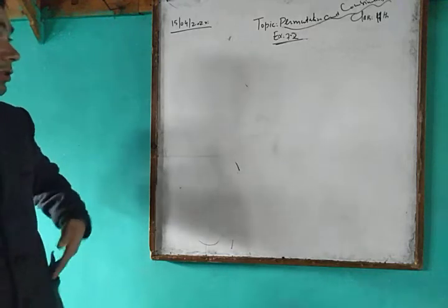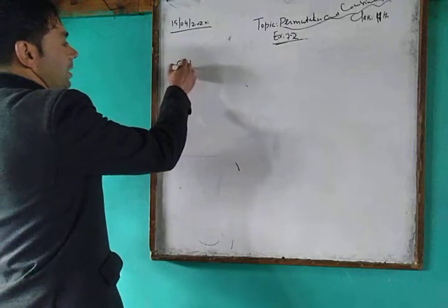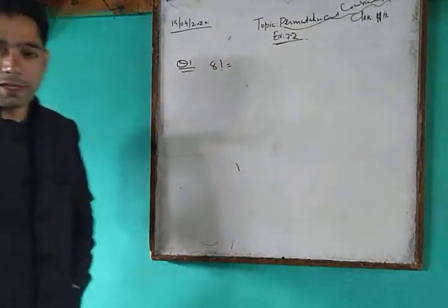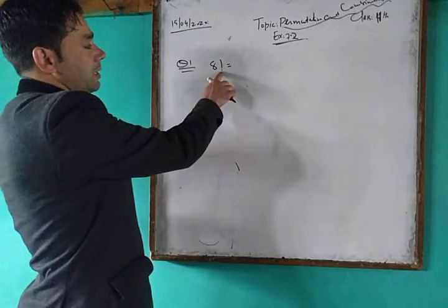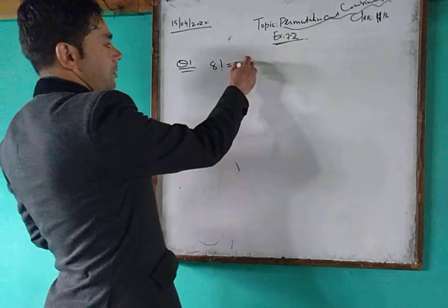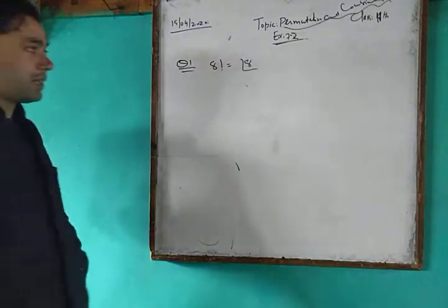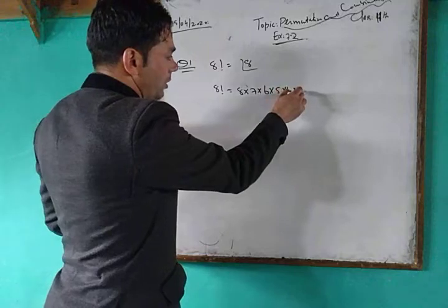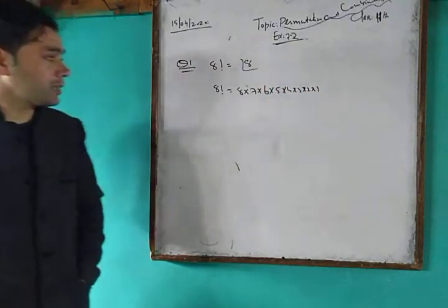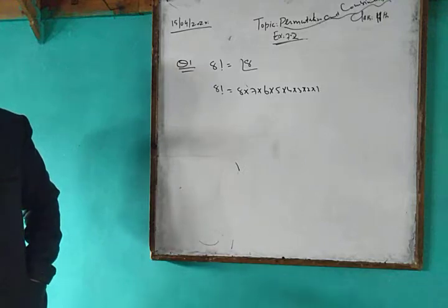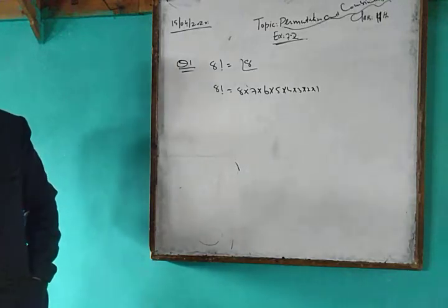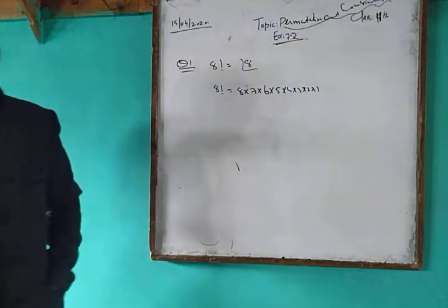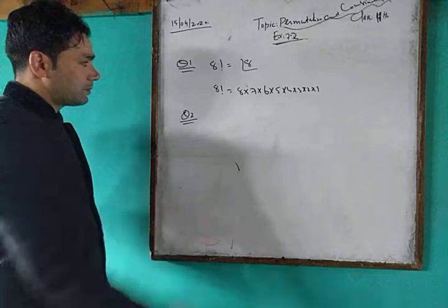Question number 1: Evaluate 8 factorial. As discussed in the first lecture, the factorial notation means the continuous product of integers from n down to 1. So 8 factorial equals 8 × 7 × 6 × 5 × 4 × 3 × 2 × 1.